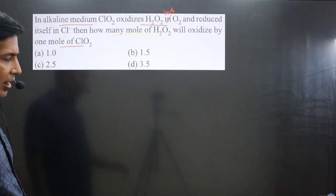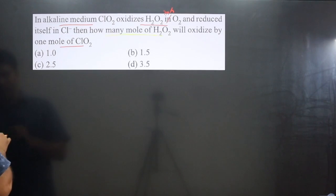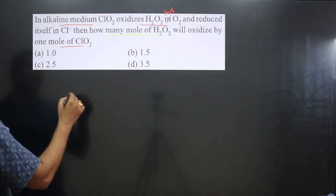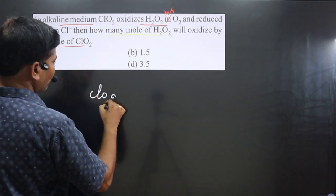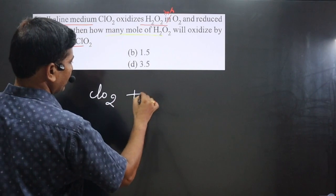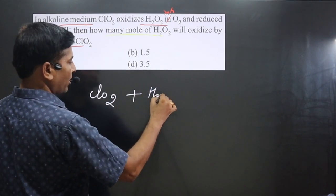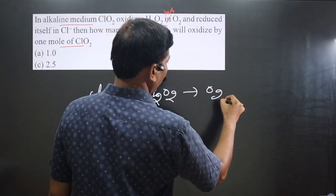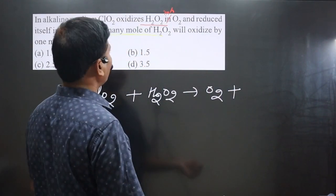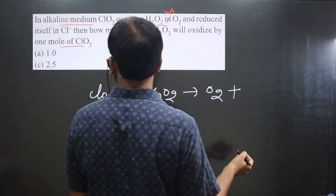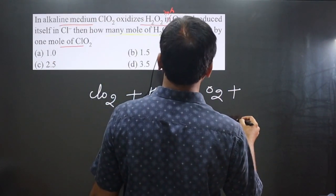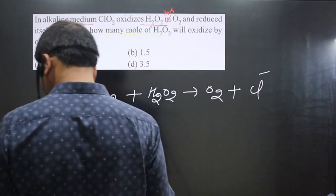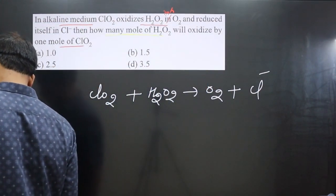First, we write down the chemical reaction. ClO₂ is oxidizing hydrogen peroxide into oxygen molecule, and ClO₂ itself is undergoing a reduction reaction to convert into Cl⁻ ion. This is the equation.